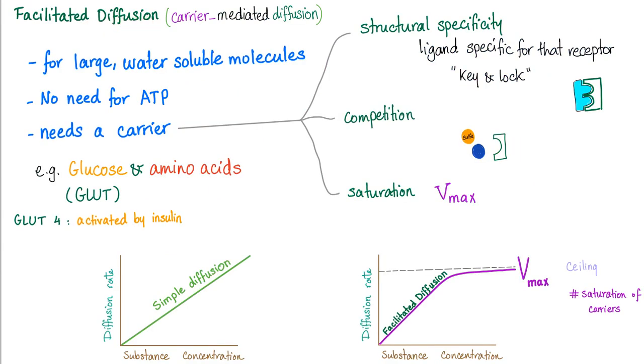Let's talk about facilitated diffusion for large water soluble molecules. What does facilitated mean? It needs a carrier, but it doesn't need energy. The carrier gives it three characteristics: structural specificity, competition, and saturation. Structural specificity means one key for one lock, ligand specific for that receptor. Competition means you can have two ligands competing for the same receptor.